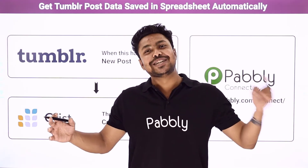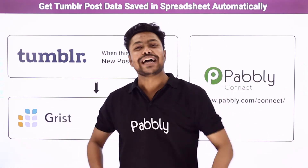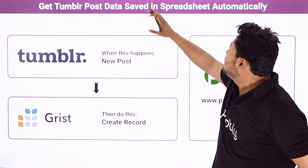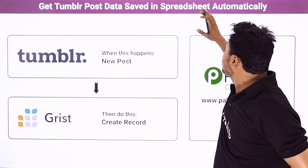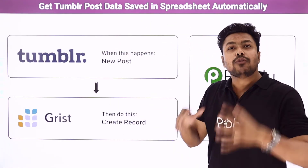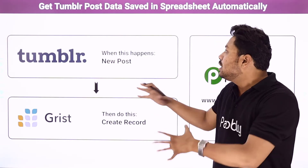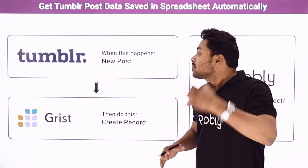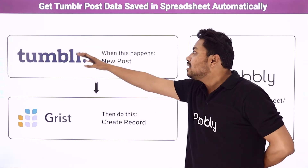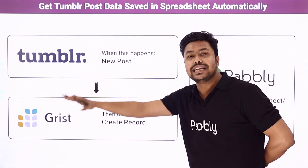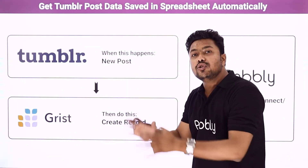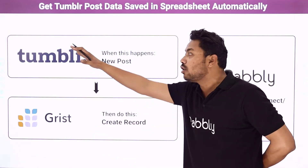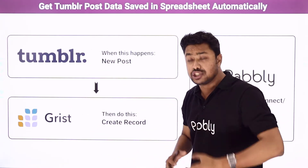Hello everyone, I'm Arpit Kumar Sharma and welcome back to Pabbly. Today I'm going to tell you how you can get Tumblr post data saved in your spreadsheet automatically. First we are going to create a new post in our Tumblr. After that, that new post will automatically be sent to our Grist account and a new record will be created on our Grist account based on that Tumblr post information.